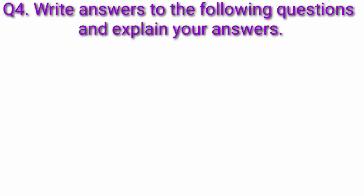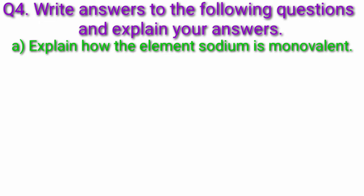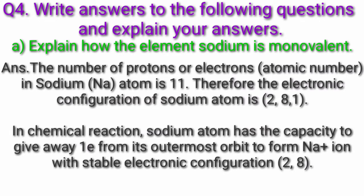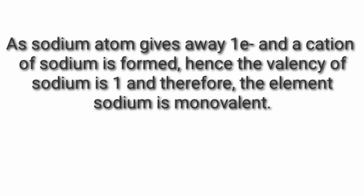Question 4A: Explain how the element sodium is monovalent. Answer: The atomic number of sodium is 11, so its electronic configuration is 2, 8, 1. In a chemical reaction, sodium has the capacity to give away one electron from its outermost orbit to form Na+ ion with stable electronic configuration. As sodium gives away one electron, a cation is formed. Hence, the valency of sodium is 1 and therefore sodium is monovalent.